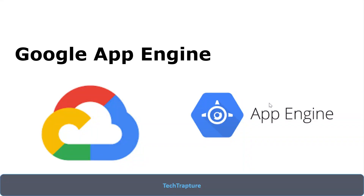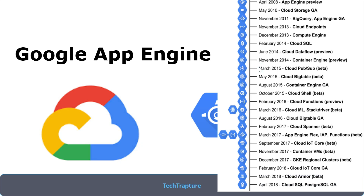Welcome to TechTapture. In our previous videos we discussed the different compute services in Google Cloud, then we jumped into Google Compute Engine and did some hands-on with persistent snapshots and all that. Now we are discussing Google App Engine. This is a special service for Google Cloud — it was the very first service launched by Google Cloud as part of their products, followed by Cloud Storage, BigQuery, and Cloud SQL. It was launched in April 2008.